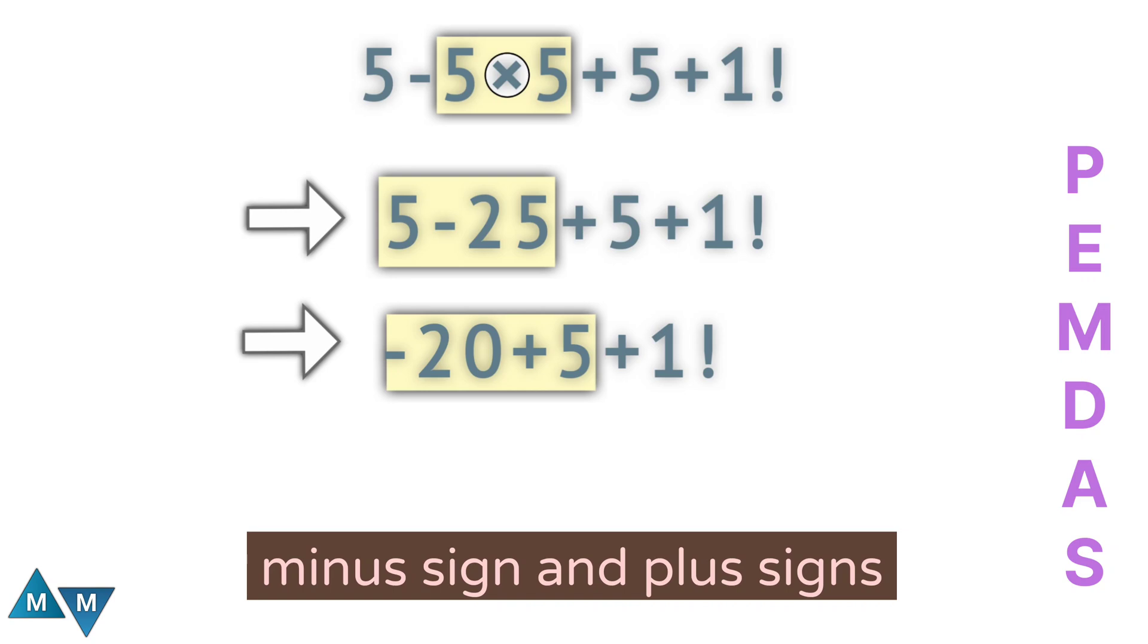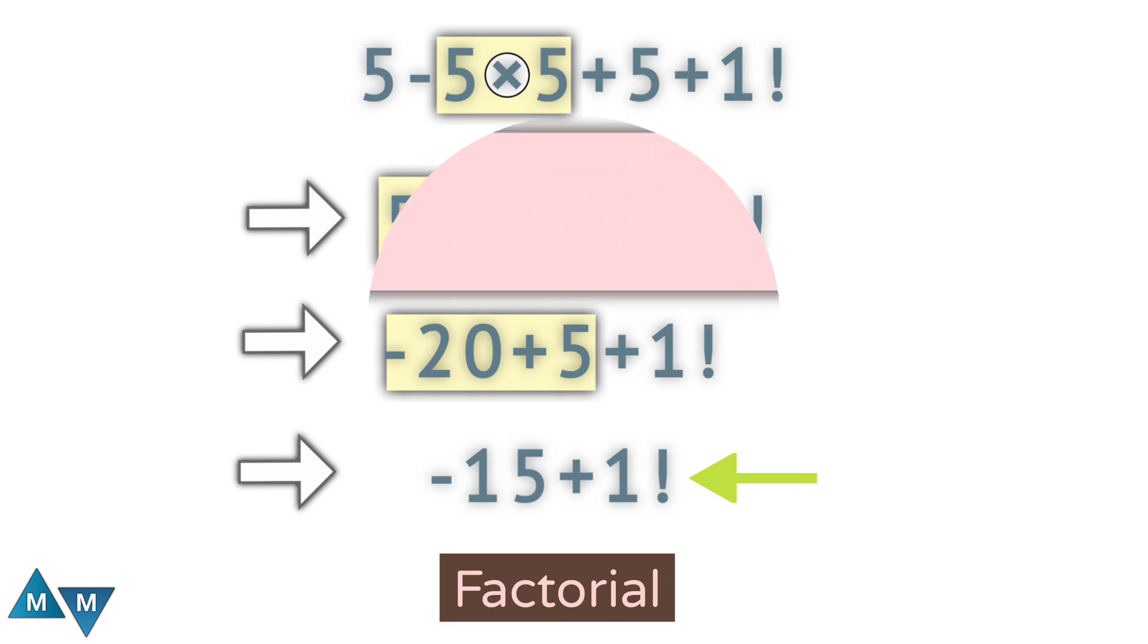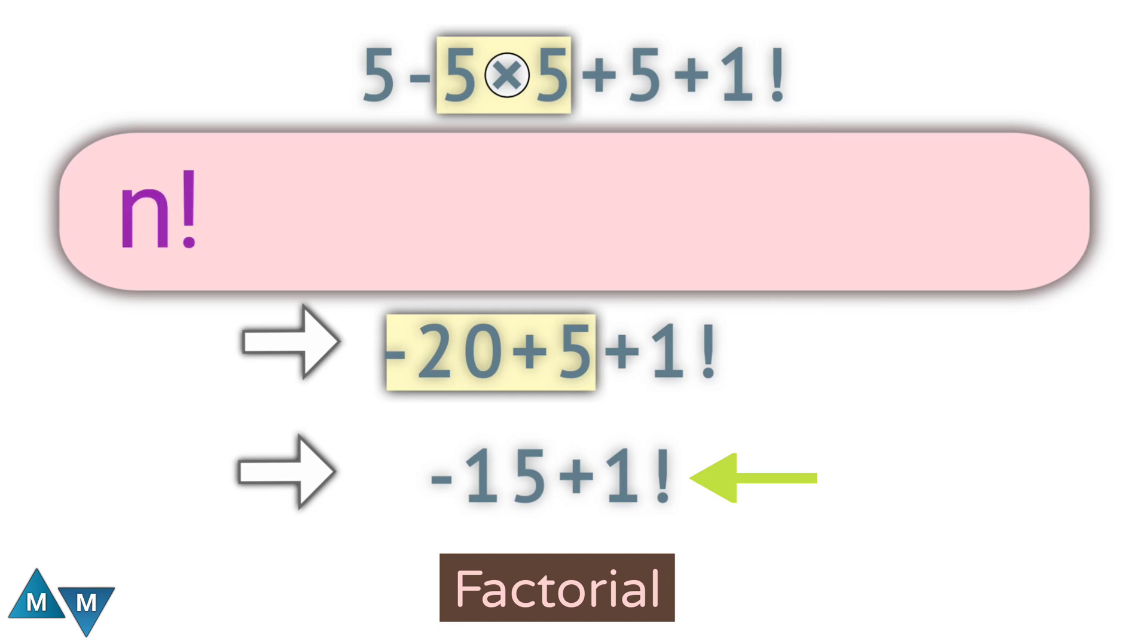Now the expression becomes minus 15 plus 1 factorial. What is factorial in mathematics? When a number has this little exclamation mark in front of it, we call this number a factorial. You take a number and multiply its predecessors until 1 arrives. 1 factorial is worth 1.